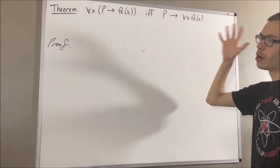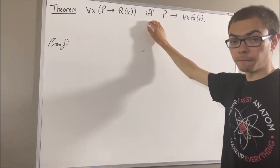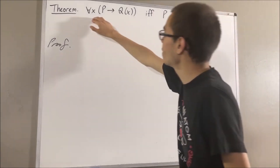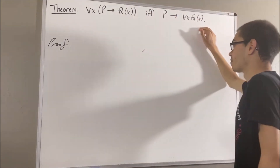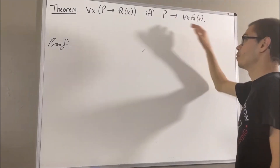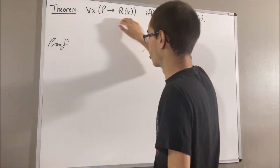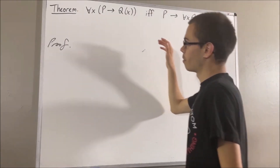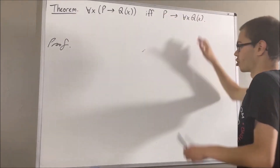Okay, now we're trying to prove a statement containing if and only if. So what we're going to do is prove if the left side is true then the right side is true, and then prove if the right side is true then the left side is true. Let's start out by proving if the left side is true, then the right side is true.